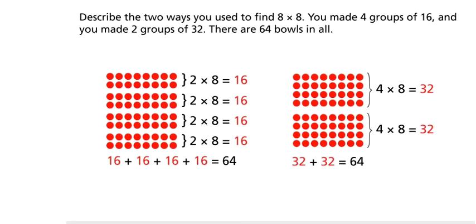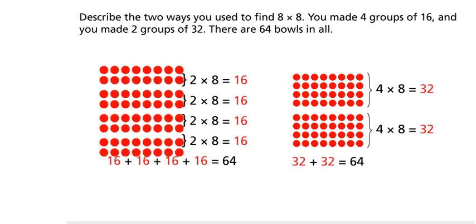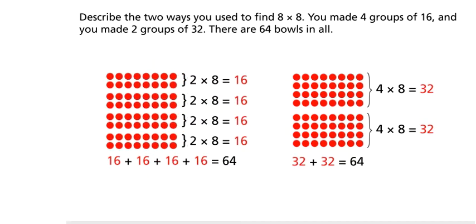Describe the two ways you used to find 8 times 8. You made 4 groups of 16, and you made 2 groups of 32. There are 64 bowls in all.